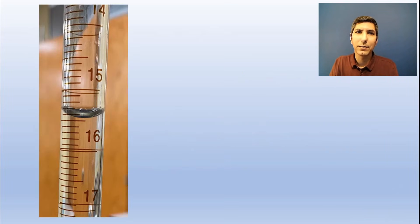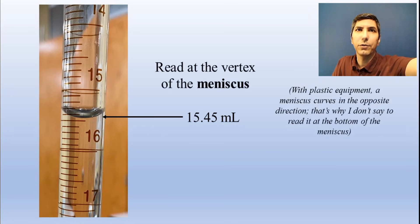When you read a burette or any volumetric glassware, always estimate exactly one decimal place between the lines. So this burette would be read as 15.45 milliliters. Notice that there's a curvature here called a meniscus. Always read that meniscus at the vertex of that curvature.